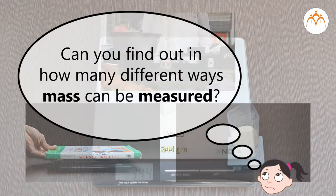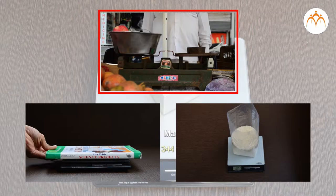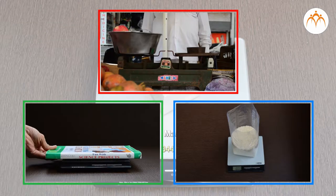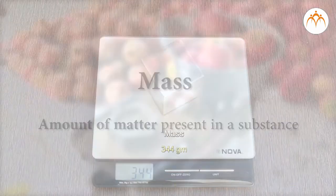Can you find out in how many different ways mass can be measured? Mass actually depends on how many and what sort of atoms make up the body, and nothing else.